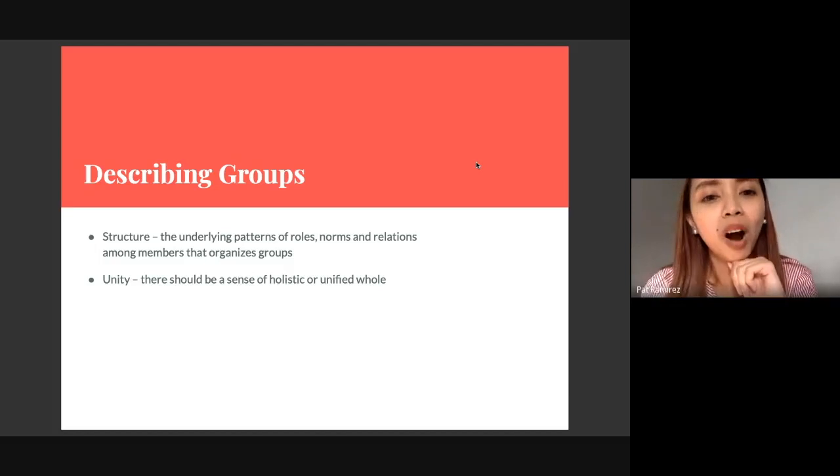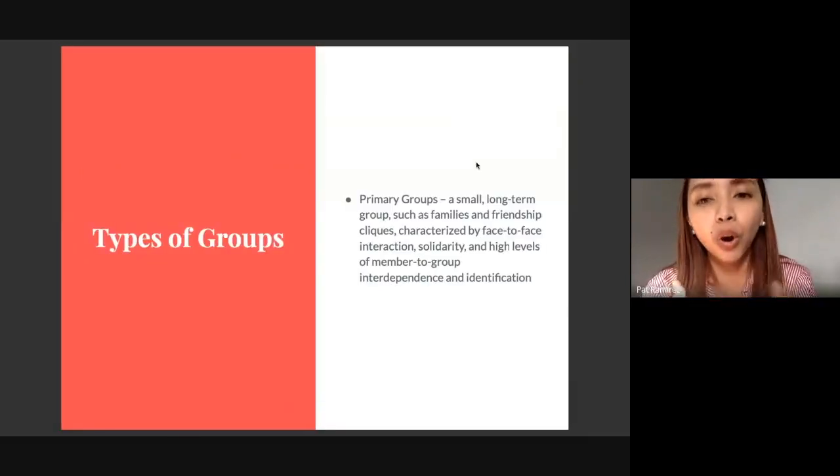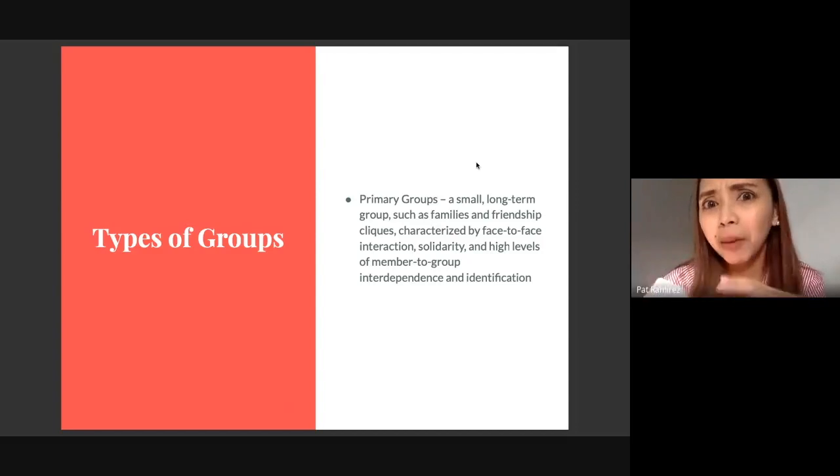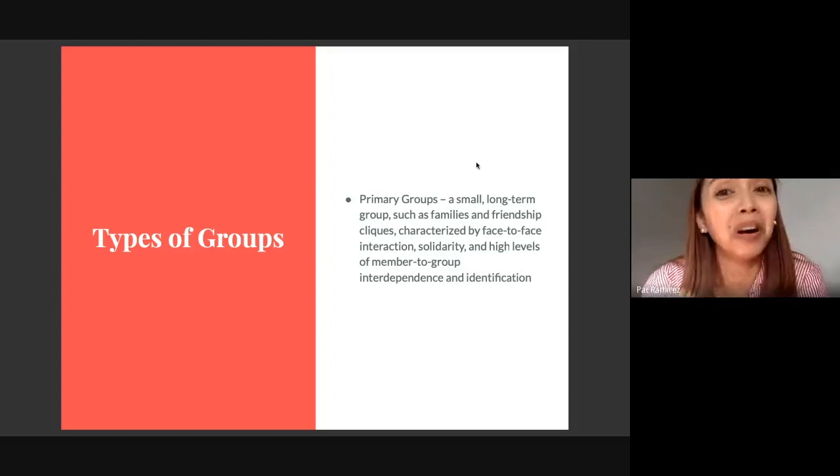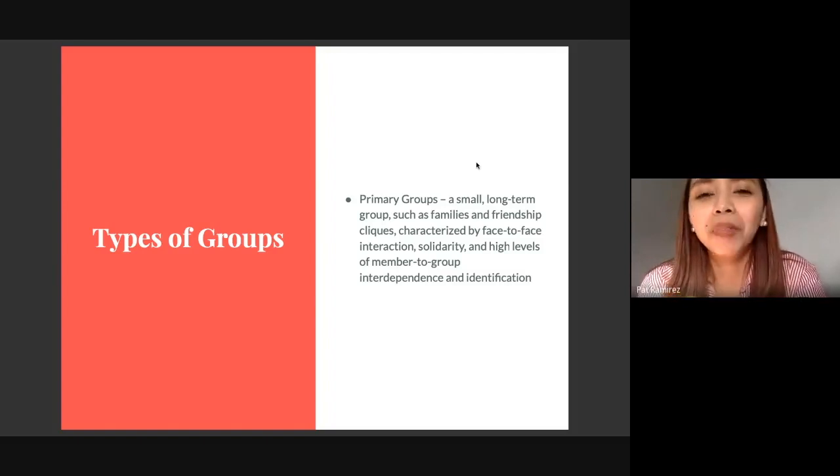And then the concept of unity - there should be that sense of holistic or unified whole when you are in a group. There are different types of groups, and as we go on with the fourth quarter you would realize why these types exist. Number one, we have what we call primary groups. Primary groups are small compared to others but it's a long-term type of group. It could include our families - very organic, you don't have to force it, you're born into the family. Friendship cliques. By definition in our books, they're characterized by face-to-face interaction, but it doesn't apply to us right now because of the pandemic.